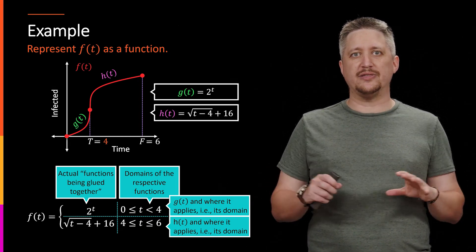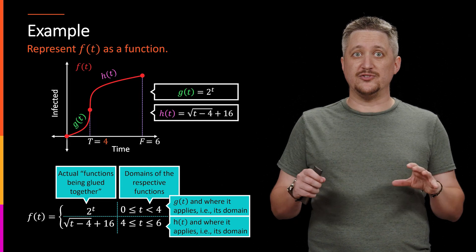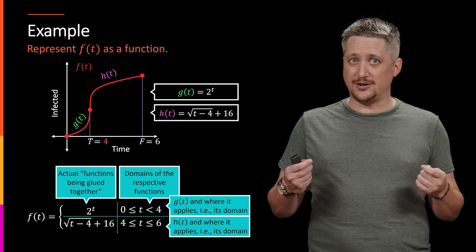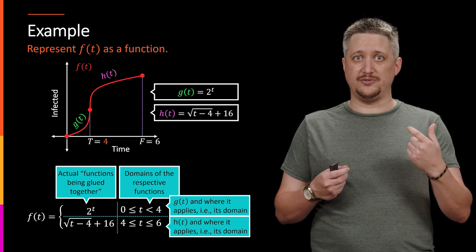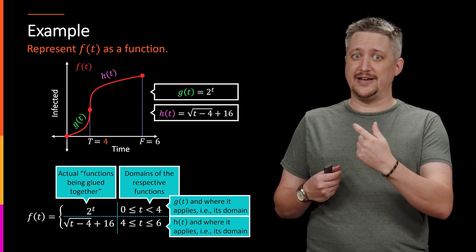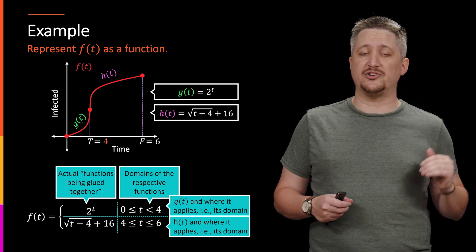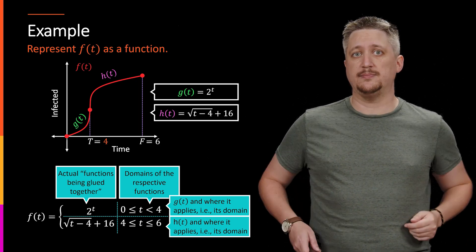But this is the sort of way that you want to think about piecewise functions in general. And you might have more rows, you won't have more columns. The columns are always going to be the two, the functions and their domains, but you may have more than two functions that you're gluing together, in which case you'll have just more and more rows.